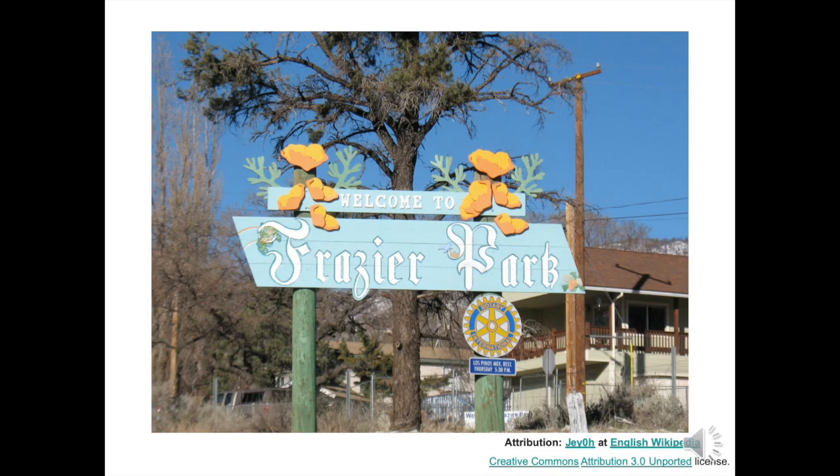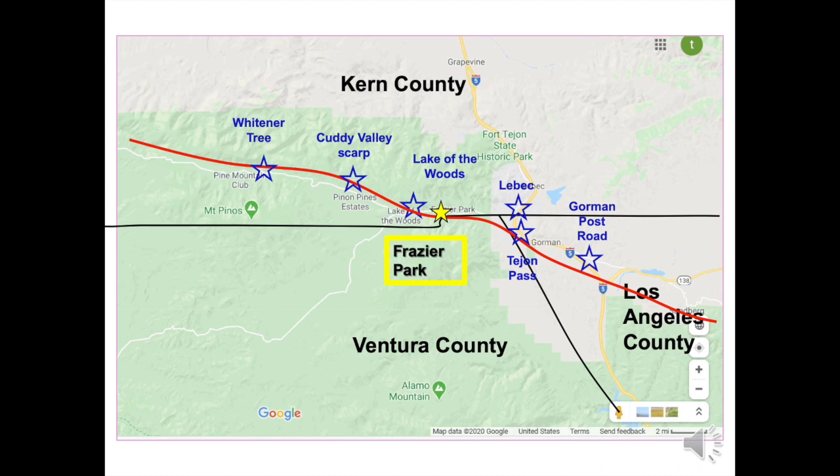Now that you have a bit of San Andreas Fault background, let's look at photos of geologic features in and around Fraser Park. This map shows six locations signified by blue stars where photos will show San Andreas Fault features. Again, the San Andreas Fault is the red line on the map.